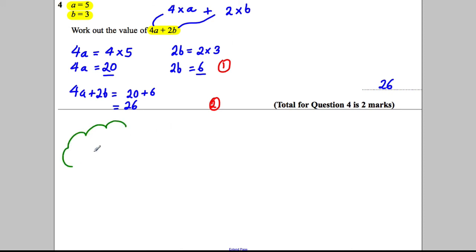Here's a little word of warning. Caution. Just what some students do. They know A is 5 and they know B is equal to 3, and they're asked to work out 4A plus 2B, or add 2B.